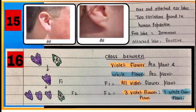In 15, see free and attached earlobes in figure A and figure B respectively. Free earlobe is a dominant character while attached earlobe is a recessive character.